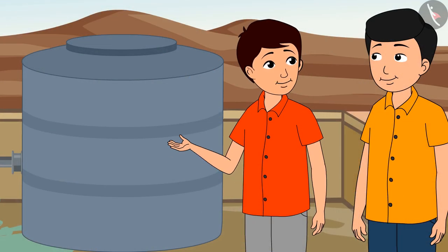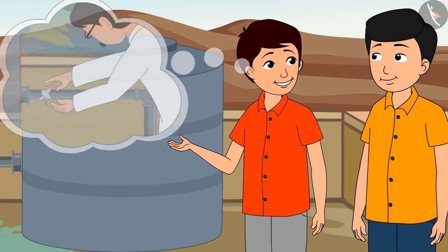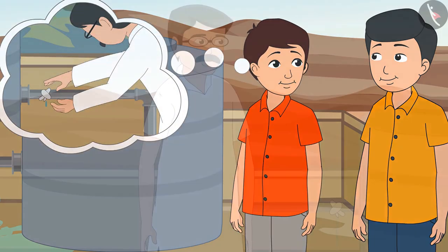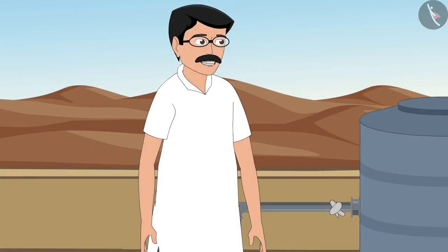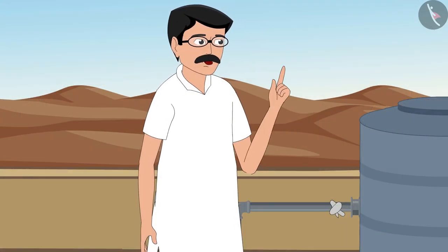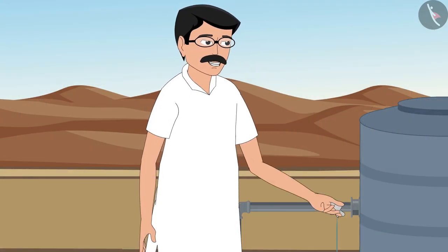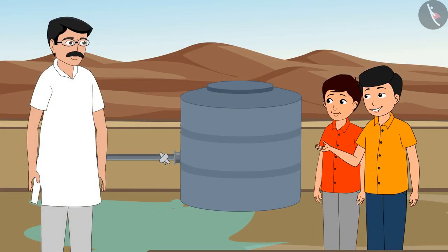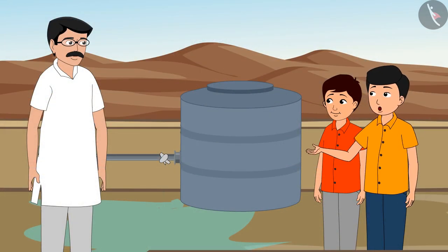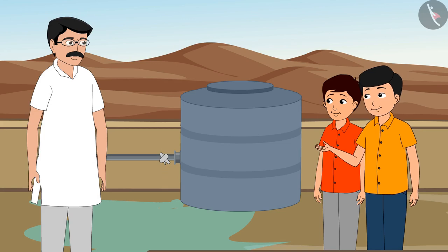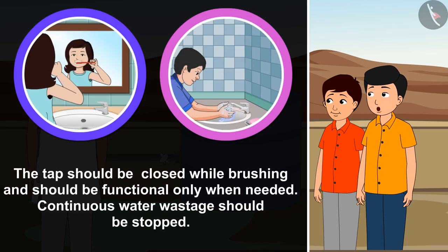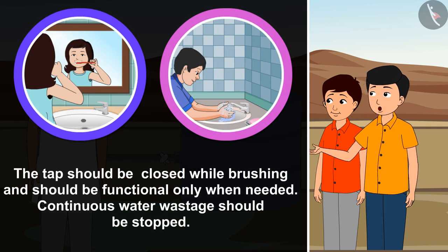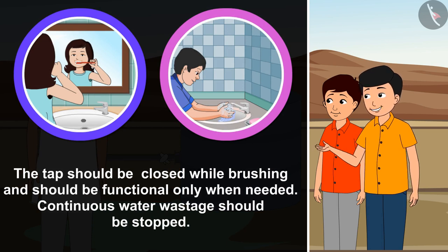What precautions should we take — like when father stopped the pipe leak? Yes, every drop of water has to be saved. Water leakage should be stopped and we should only use as much water as we need. The teacher said that the tap should be closed while brushing and should be open only when needed. Continuous water wastage should be stopped.